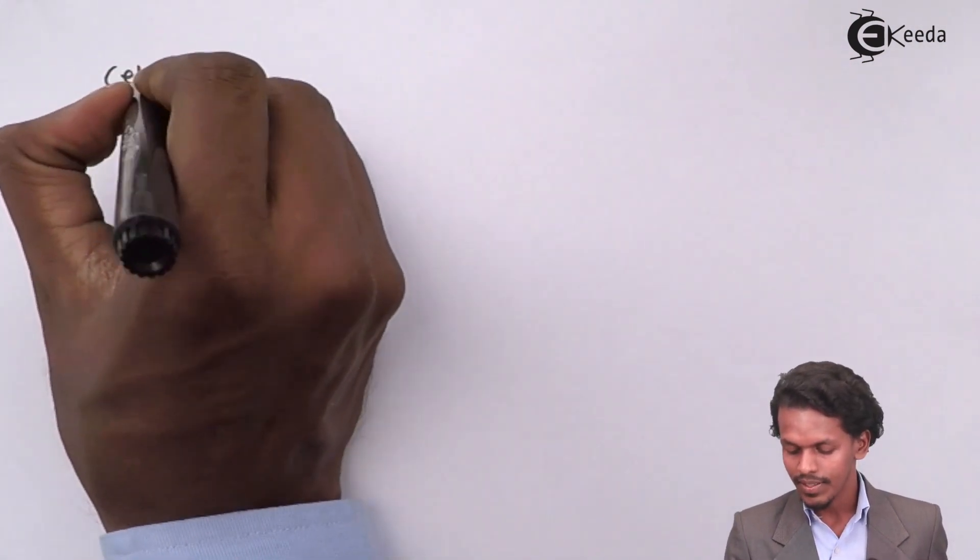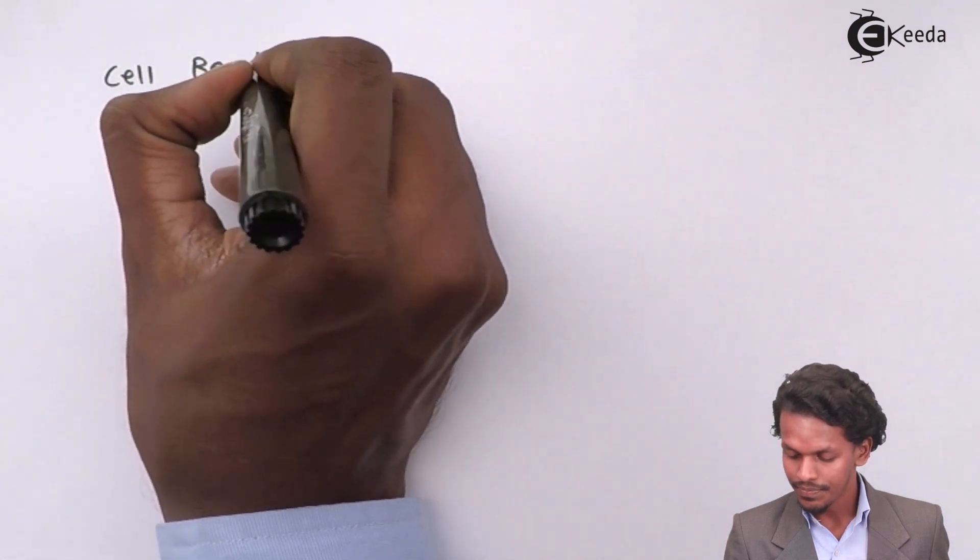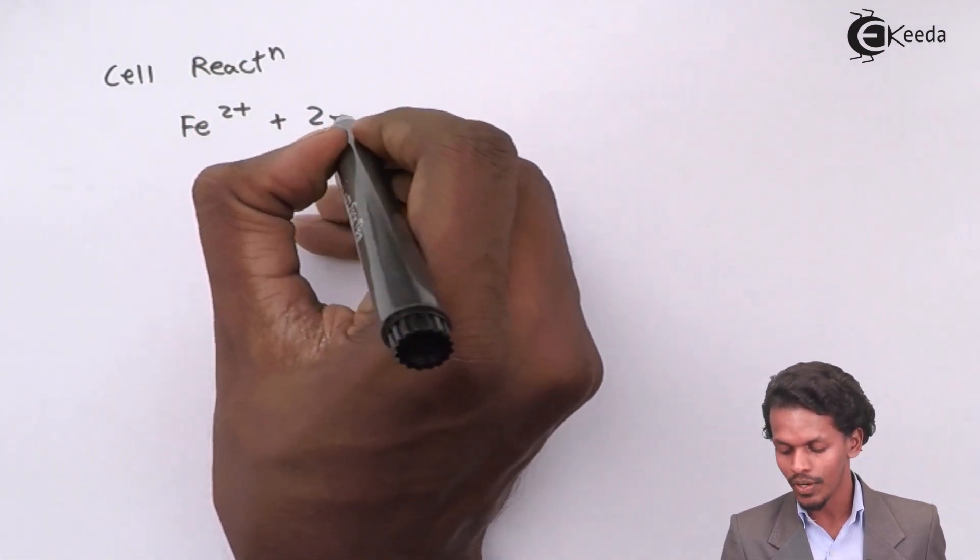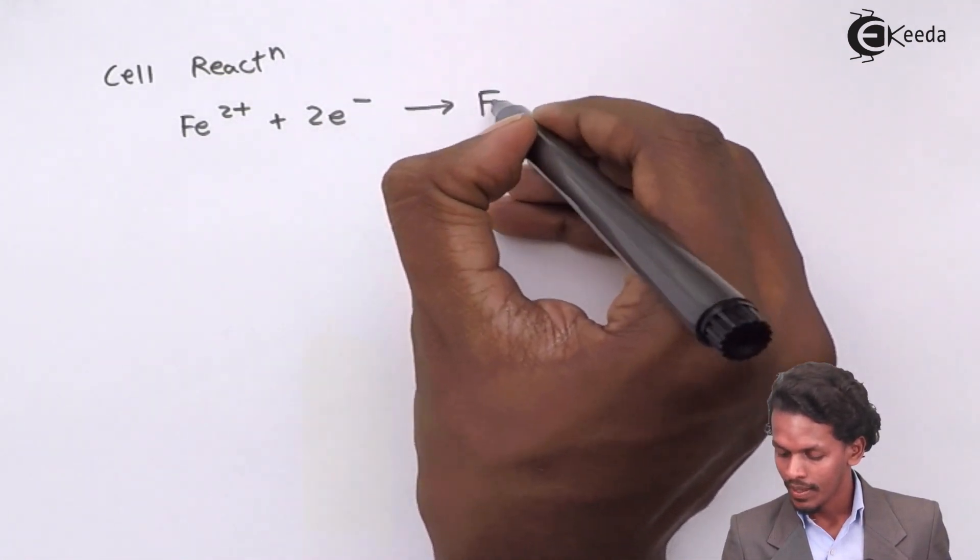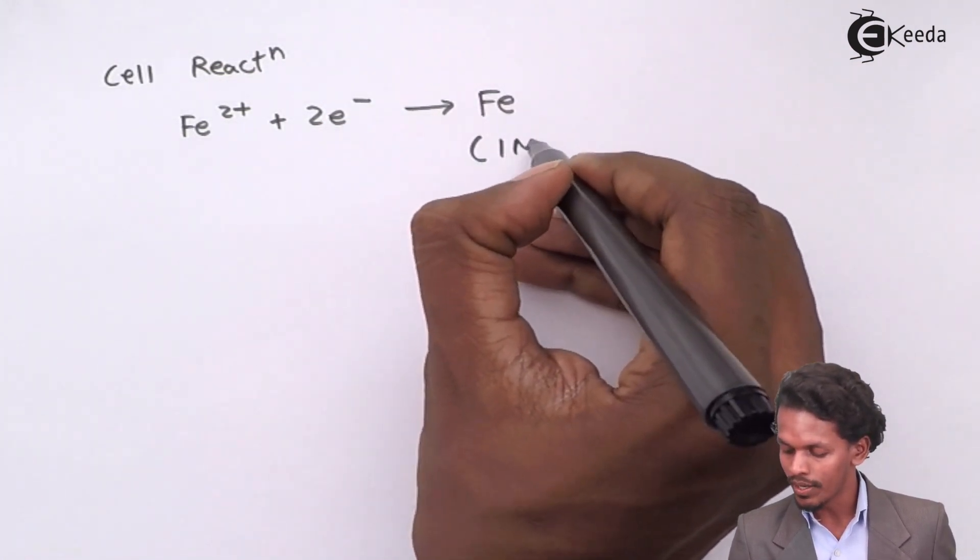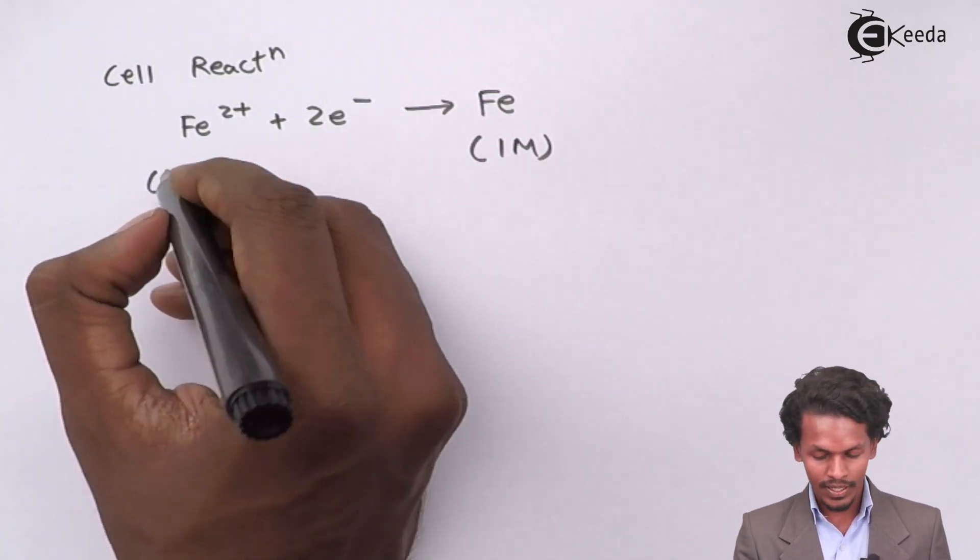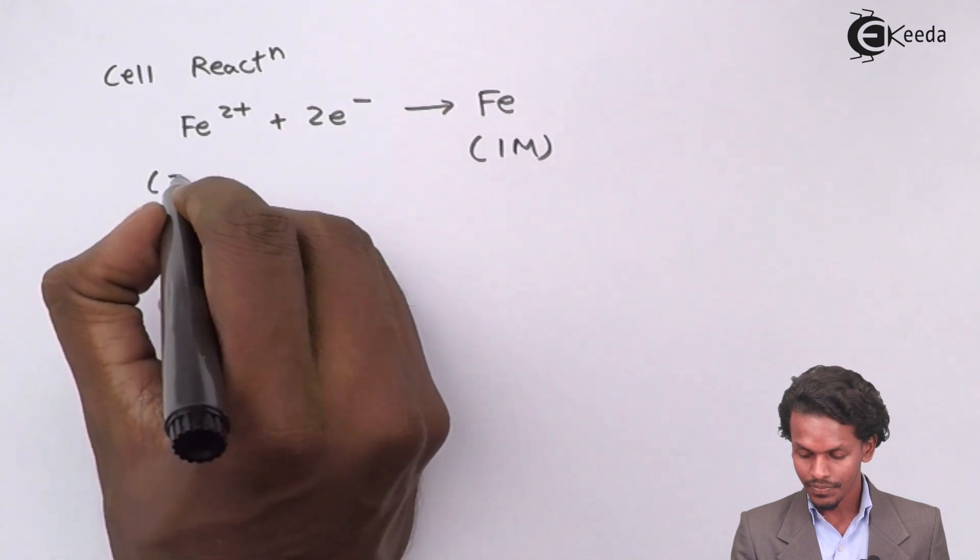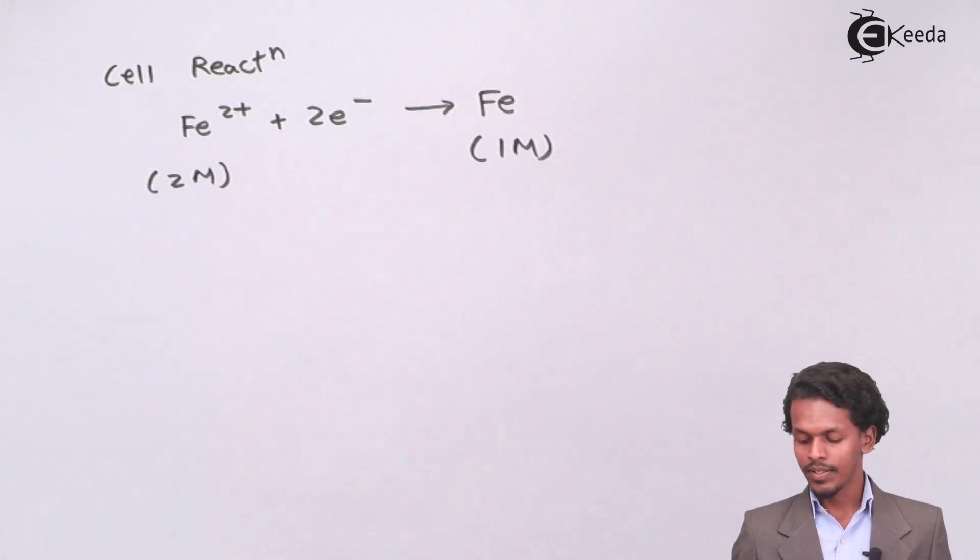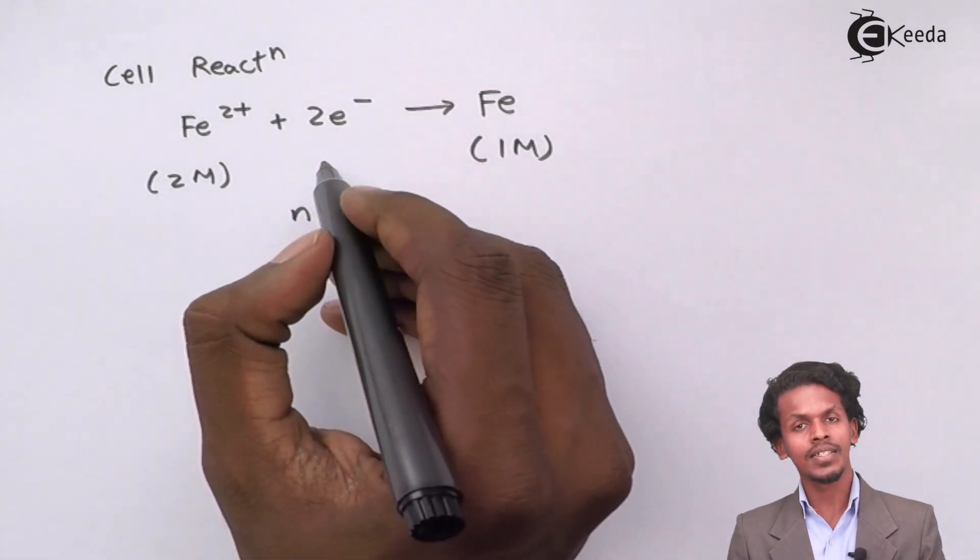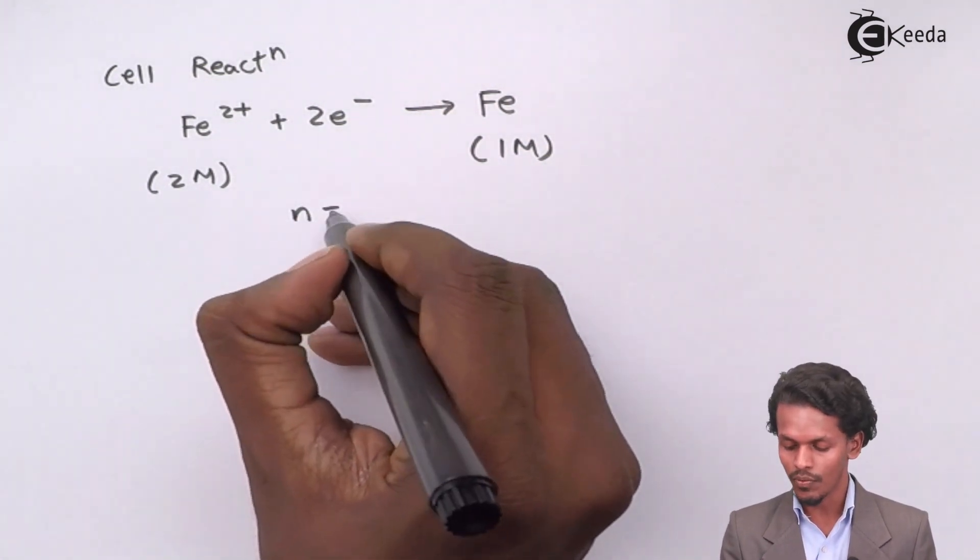The cell reaction can be written as when Fe2+ is undergoing reduction process it will accept 2 electrons to form Fe. The concentration of Fe is 1 molar because it is present in solid form and concentration of Fe2+ is 2 molar. In this situation the value of N is 2 because the number of electrons involved is 2.